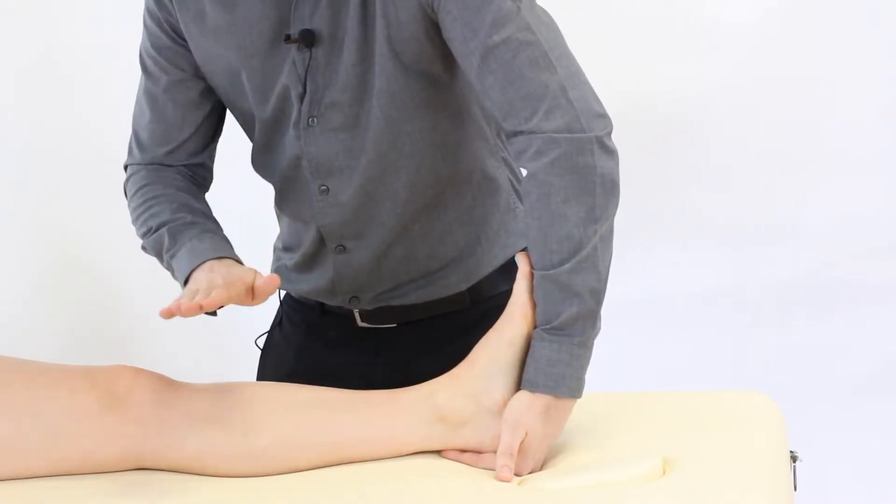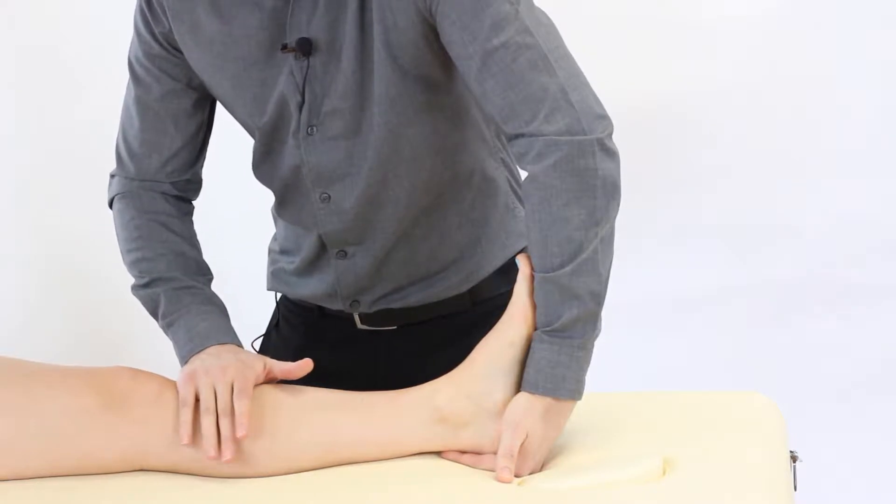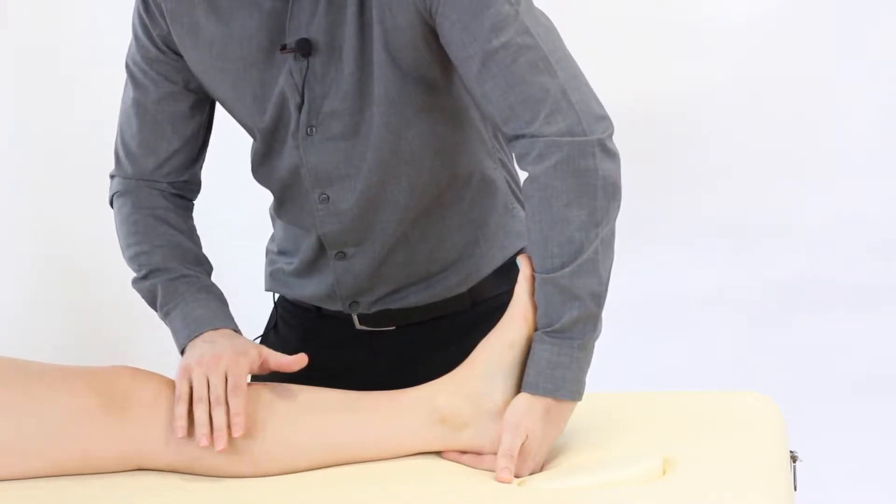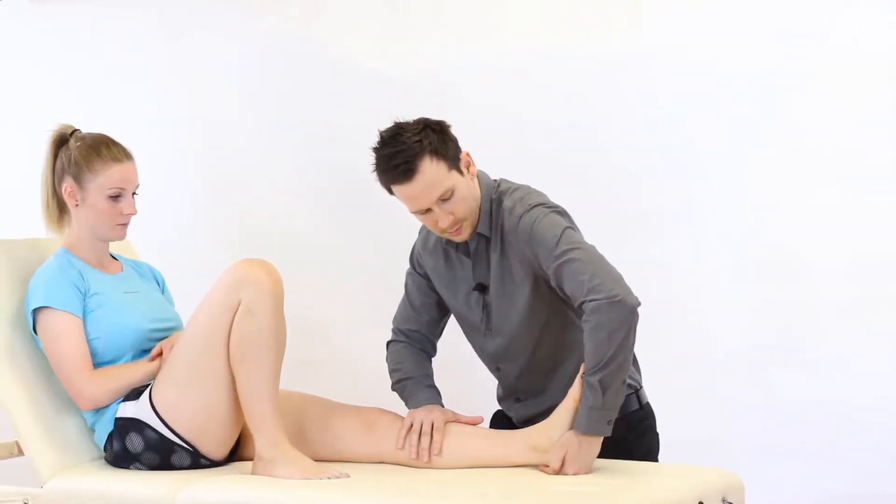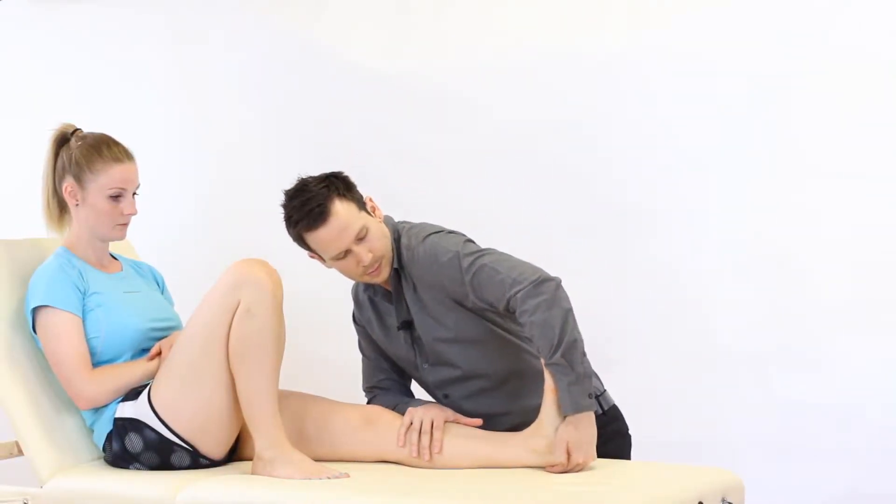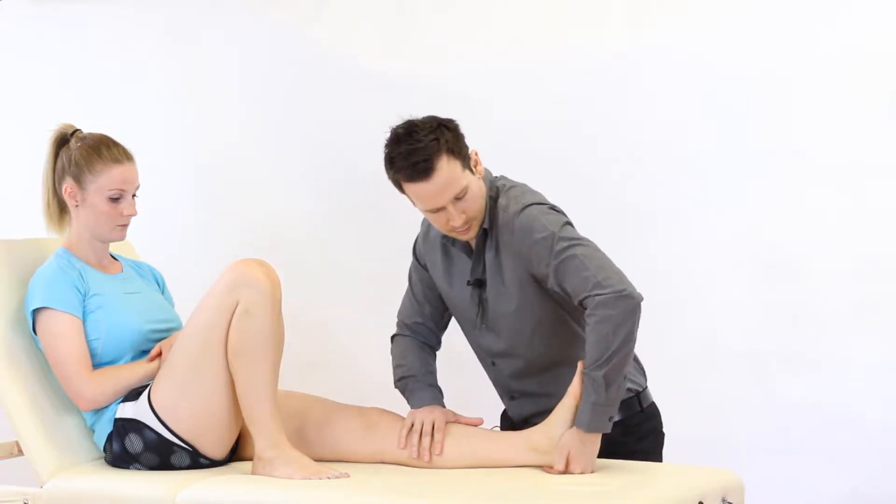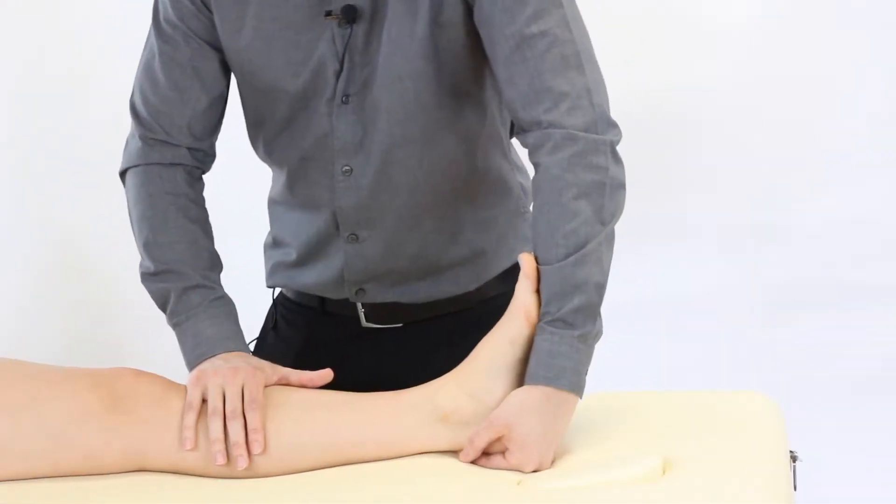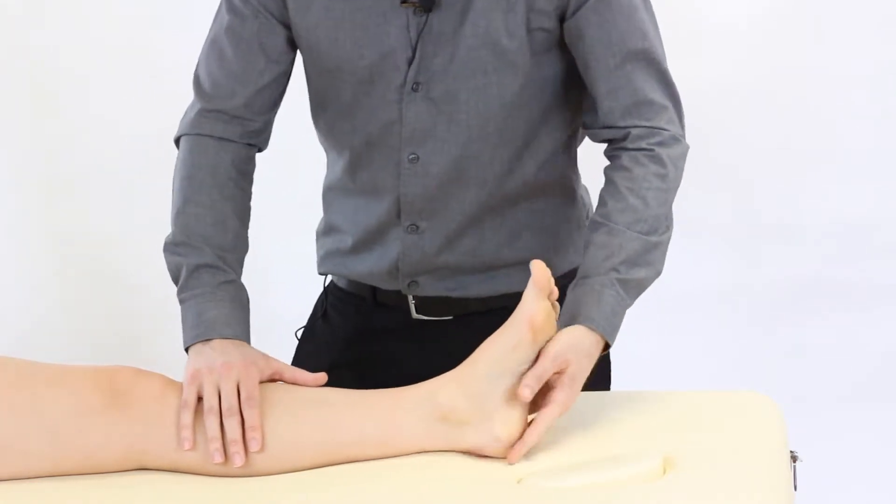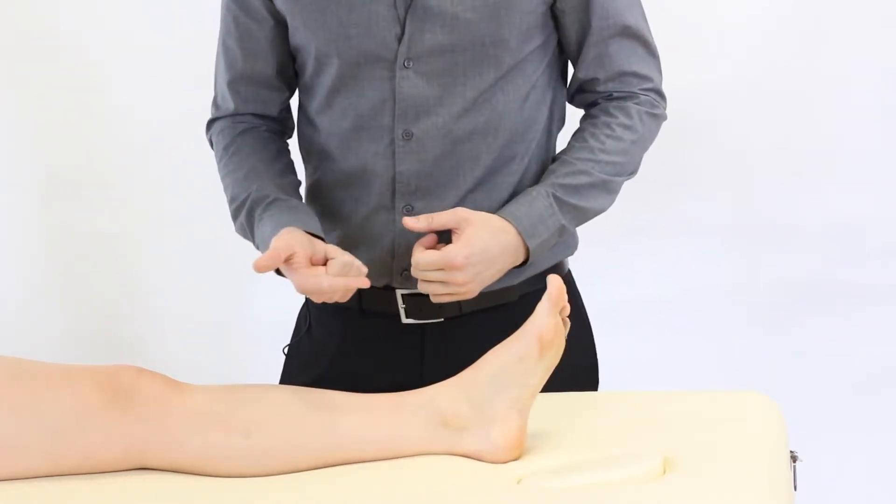From here we're going to place the flat of our hand around the tibial tuberosity region so as to not put pressure on the knee joint. Once we've secured that down we're going to lean our body weight across to pull the foot and ankle into full dorsiflexion. So that's the action. Now let's talk about pain, range, and end feel.